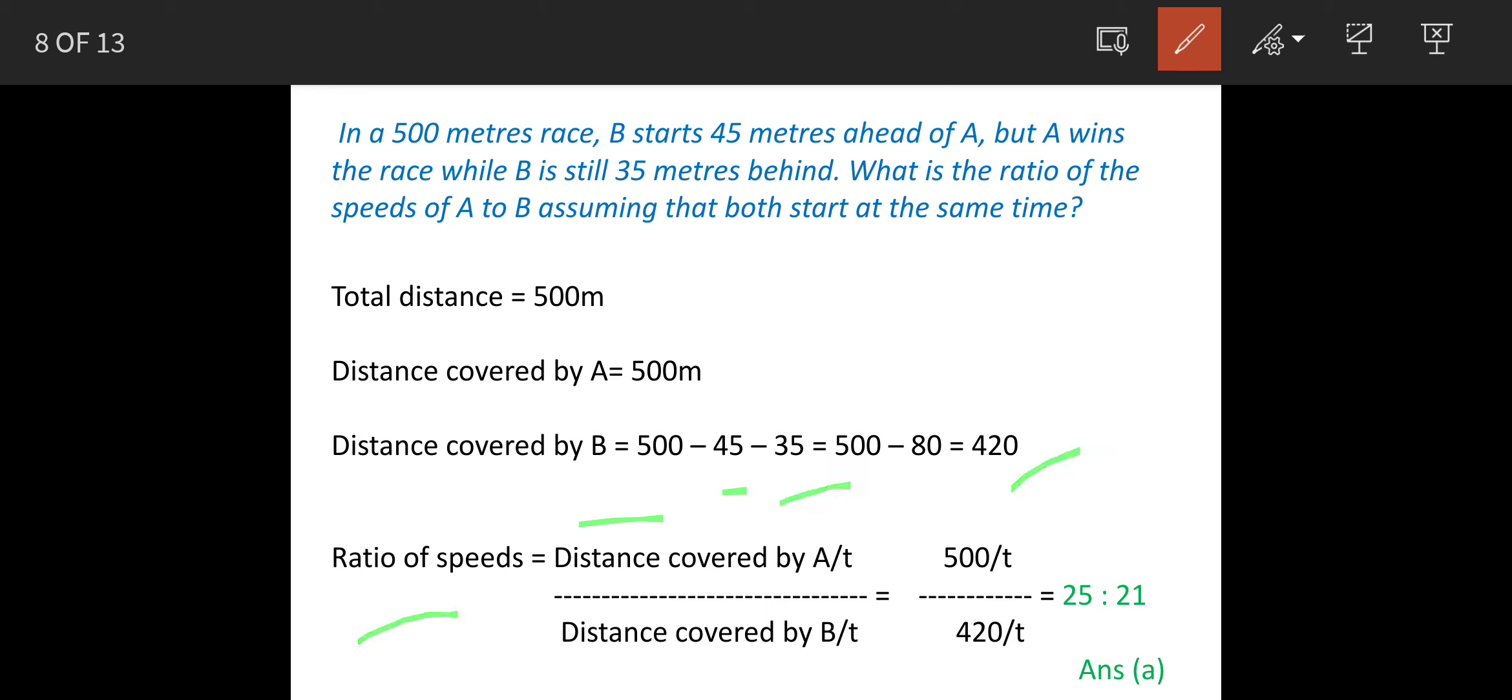So the ratio of speeds is distance covered by A divided by time and distance covered by B divided by time. They both start the race at the same time, this is given, so time is the same. So we put up the value 500 upon T and 420 upon T. The ratio is 25 to 21, answer is option A.